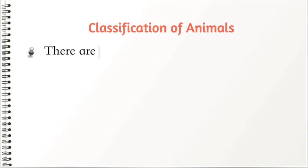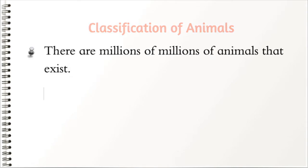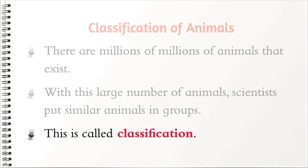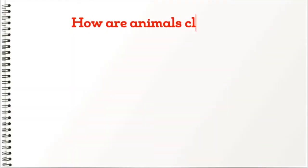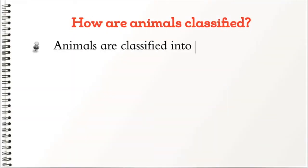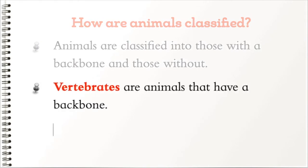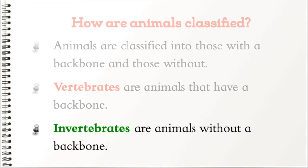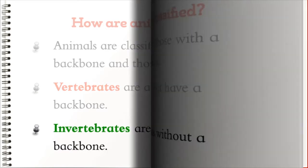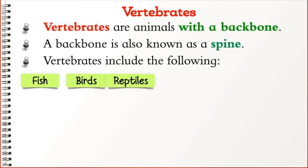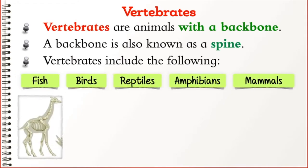There are millions of animals that exist. With this large number of animals, scientists put similar animals in groups — this is called classification. Animals are classified into those with a backbone and those without. Vertebrates are animals that have a backbone, also known as a spine. Invertebrates are animals without a backbone.